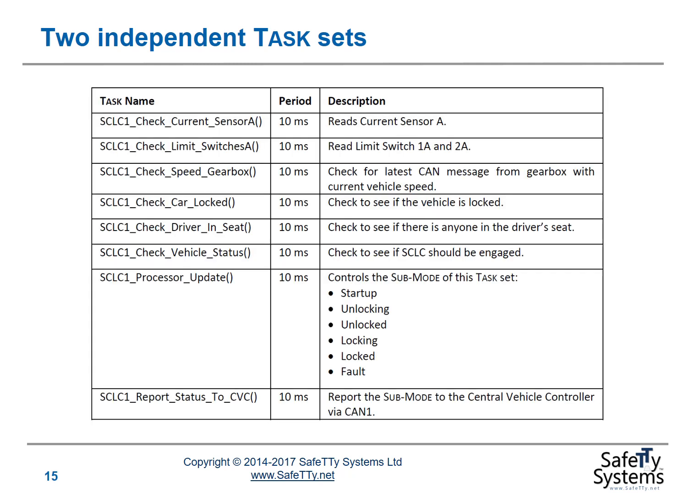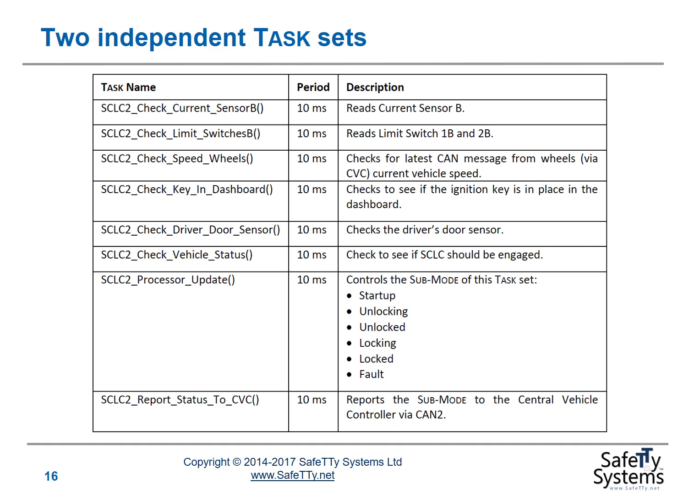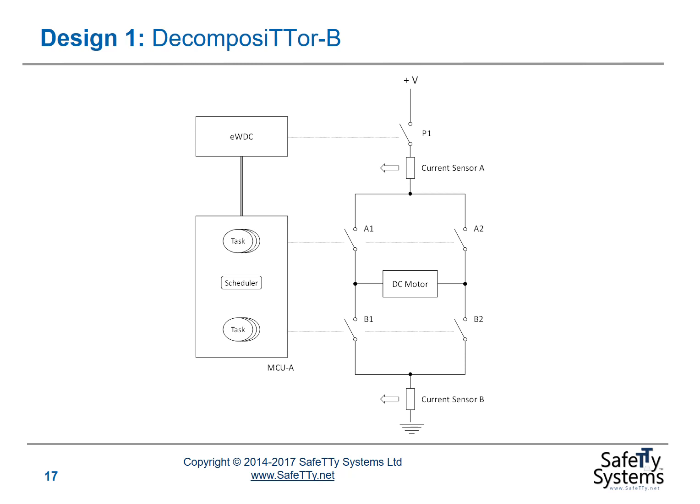For example, in task set 1 we read current sensor A, and in task set 2 we read current sensor B. We have different sets of tasks with as high a level of independence as is possible. These are discussed further in chapter 25 of the book. Here, I want to focus on the high level decision about the design options.